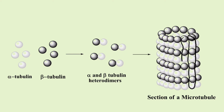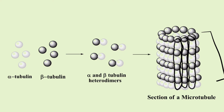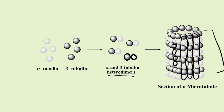Thirteen protofilaments assemble and organize themselves to form a tube or microtubule. Each protofilament is made up of a chain of tubulin heterodimers. Each heterodimer is made up of one beta tubulin and one alpha tubulin — hence the name heterodimers, because the tubulin dimers are made up of two different monomeric units: alpha and beta.